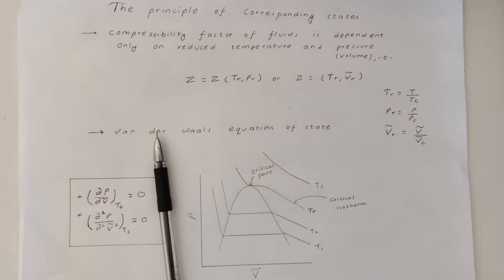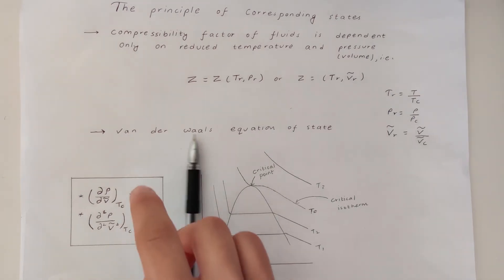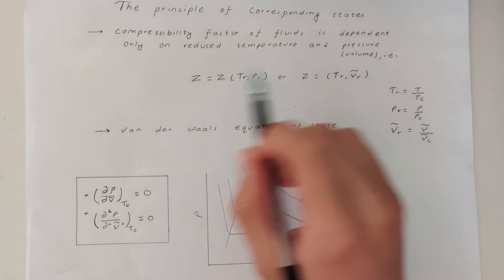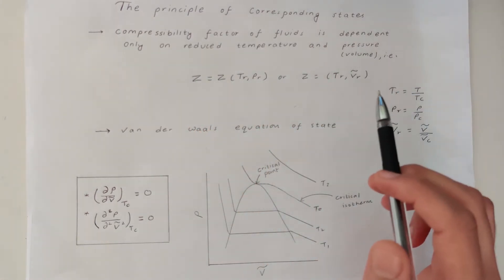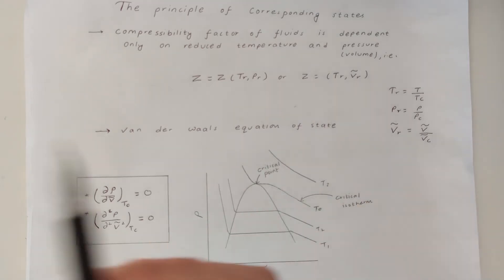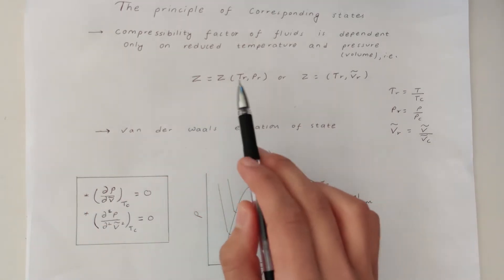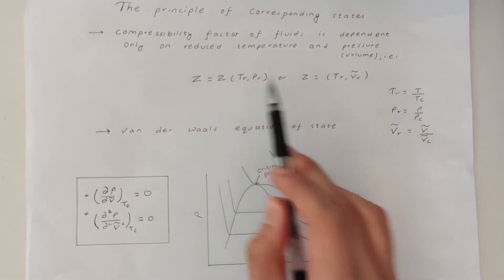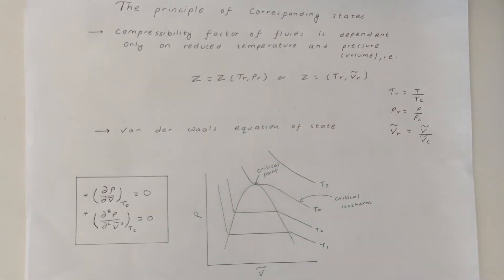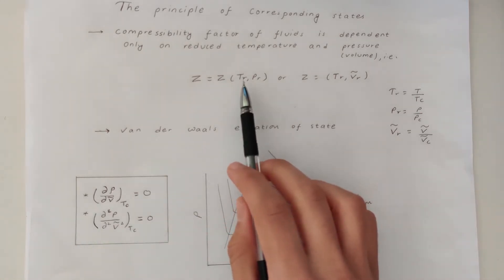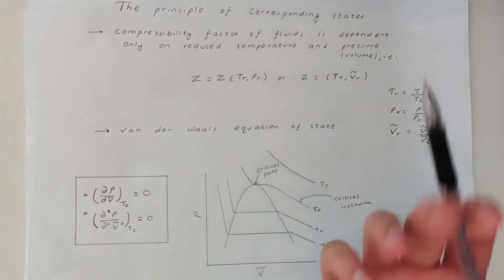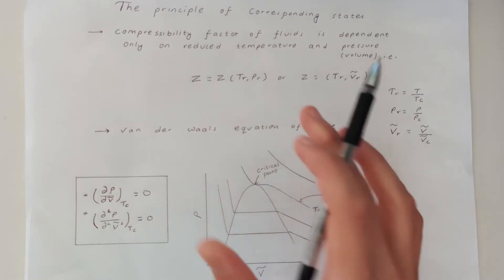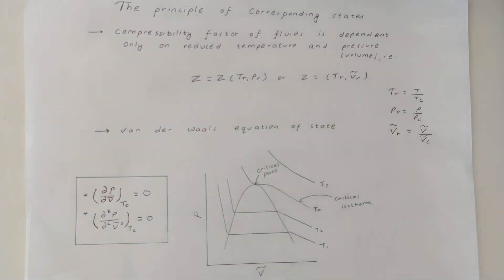The principle of corresponding states states that the compressibility factor of a fluid is dependent only on reduced temperature and pressure or volume. In other words, fluids must have the same compressibility factor at the same reduced temperature and pressure or volume. As long as gases are at the same reduced conditions — same reduced temperature and reduced pressure — it does not matter what component or substance you are talking about; they are going to behave alike.